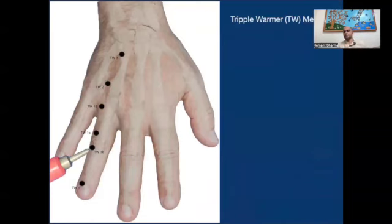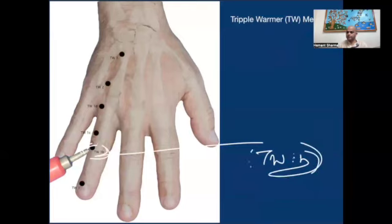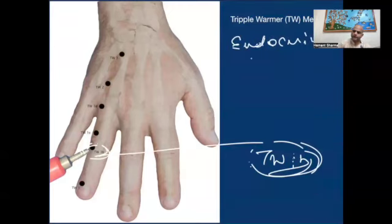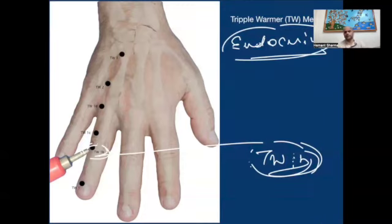This is the triple warmer meridian, and this point is the CMP point of the triple warmer meridian — written as 'triple bar mur 1V.' With the help of this we can work on all the problems of the triple warmer. The other name of the triple warmer is the endocrine meridian. So we know thyroid disease, pancreas problems like diabetes — there are lots of problems connected with hormones — and with the help of the CMP point we can treat all the endocrine and hormonal problems.